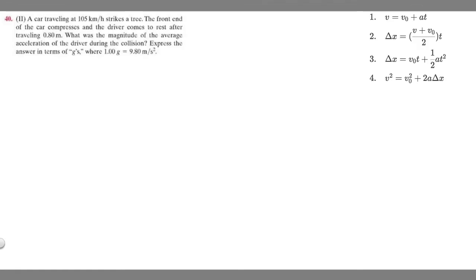In this problem we're told a car traveling 105 kilometers per hour strikes a tree. The front end of the car compresses and the driver comes to rest after traveling 0.8 meters. What was the magnitude of the average acceleration of the driver during the collision? We're told to express the answer in terms of g's where 1g is 9.8 meters per second squared.